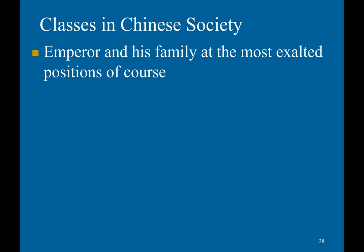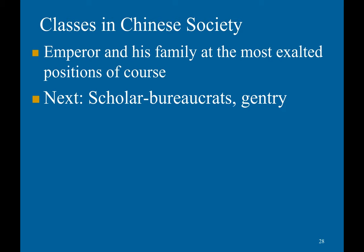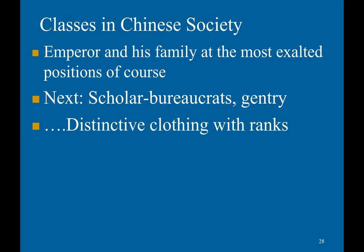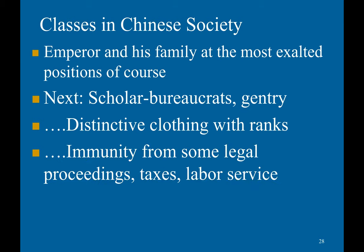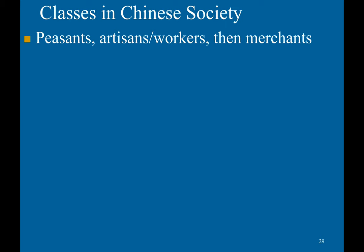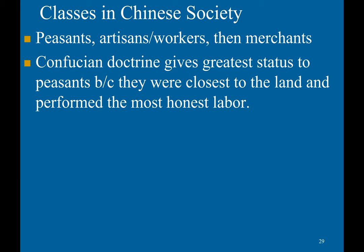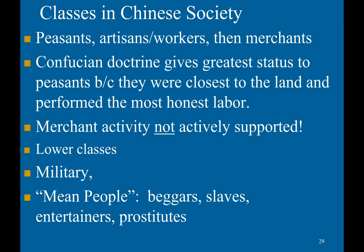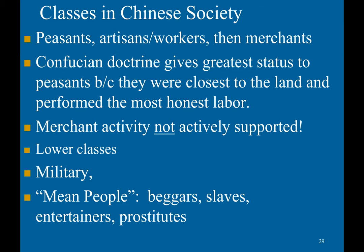The emperor and his family were at the most exalted positions. Below them were the scholar bureaucrats and the gentry, with distinctive clothing marking their ranks — they were also exempt from legal proceedings, taxes, and labor service. Below them were the peasants, artisans, workers, and then the merchants. Confucian doctrine gave greater status to peasants because they were closest to the land and performed the most honest labor. Merchant activity was not actively supported because it was viewed as parasitic. The lowest classes included the military, beggars, slaves, entertainers, and prostitutes.